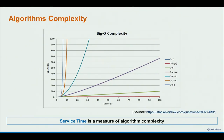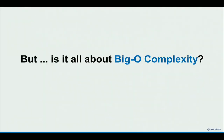We learned from school that Big O complexity matters — the higher the complexity the more it impacts performance, meaning we wait longer for a response. However, the question is: how does Big O complexity work on modern hardware? When I say modern hardware I'm also referring to CPU caching. Is it all about Big O complexity nowadays?